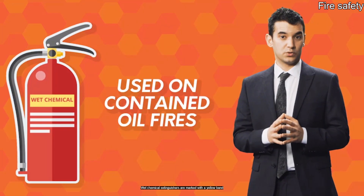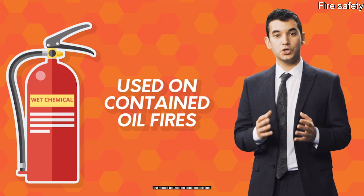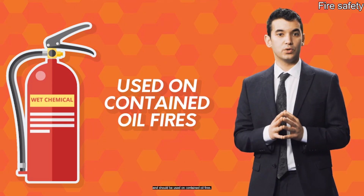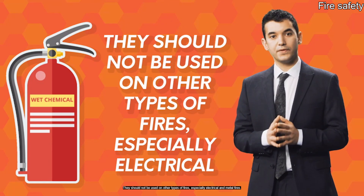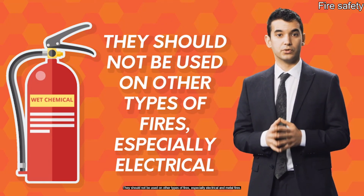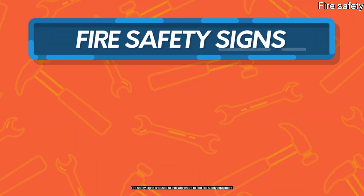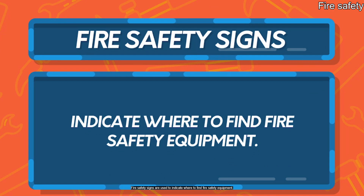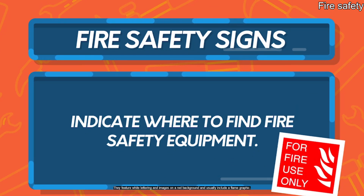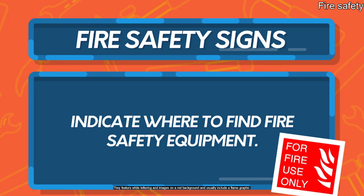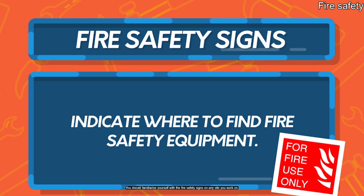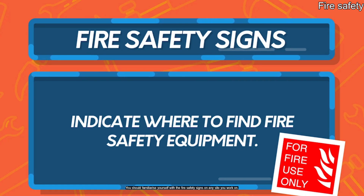Wet chemical extinguishers are marked with a yellow band and should be used on contained oil fires. They should not be used on other types of fires, especially electrical and metal fires. We have created a reference chart that can be downloaded from the link below this video. Fire safety signs indicate where to find fire safety equipment; they feature white lettering and images on a red background and usually include a flame graphic. You should familiarise yourself with the fire safety signs on any site you work on.